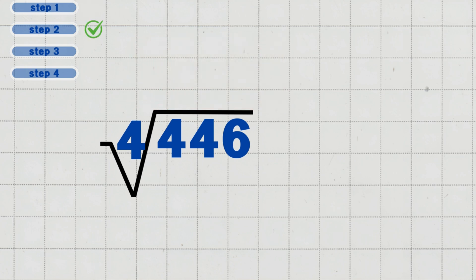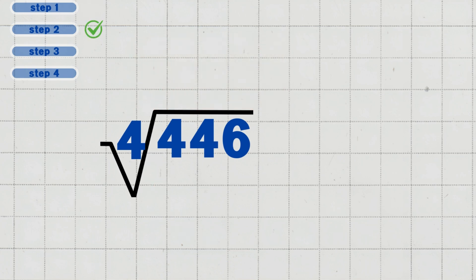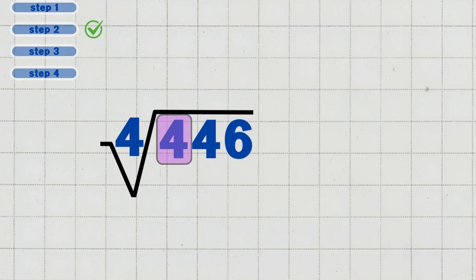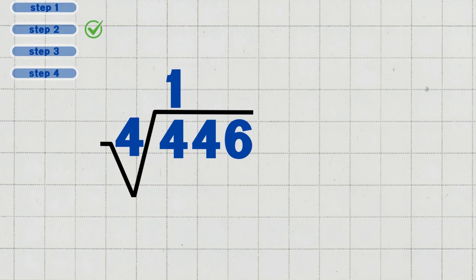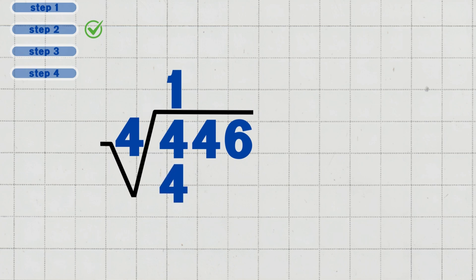Step two: divide the first digit. Look at the first digit four in four hundred and forty-six. Four divided by four equals one. Write one above the four in the quotient. Multiply one times four, which equals four. Subtract four minus four, which equals zero.